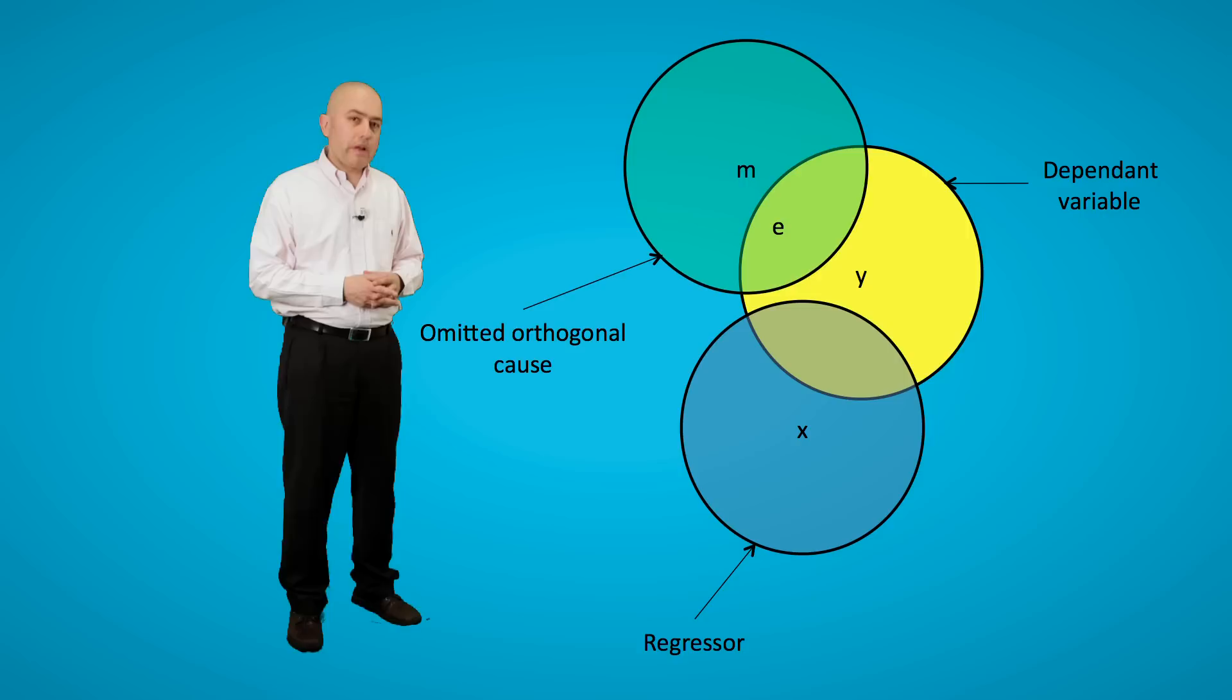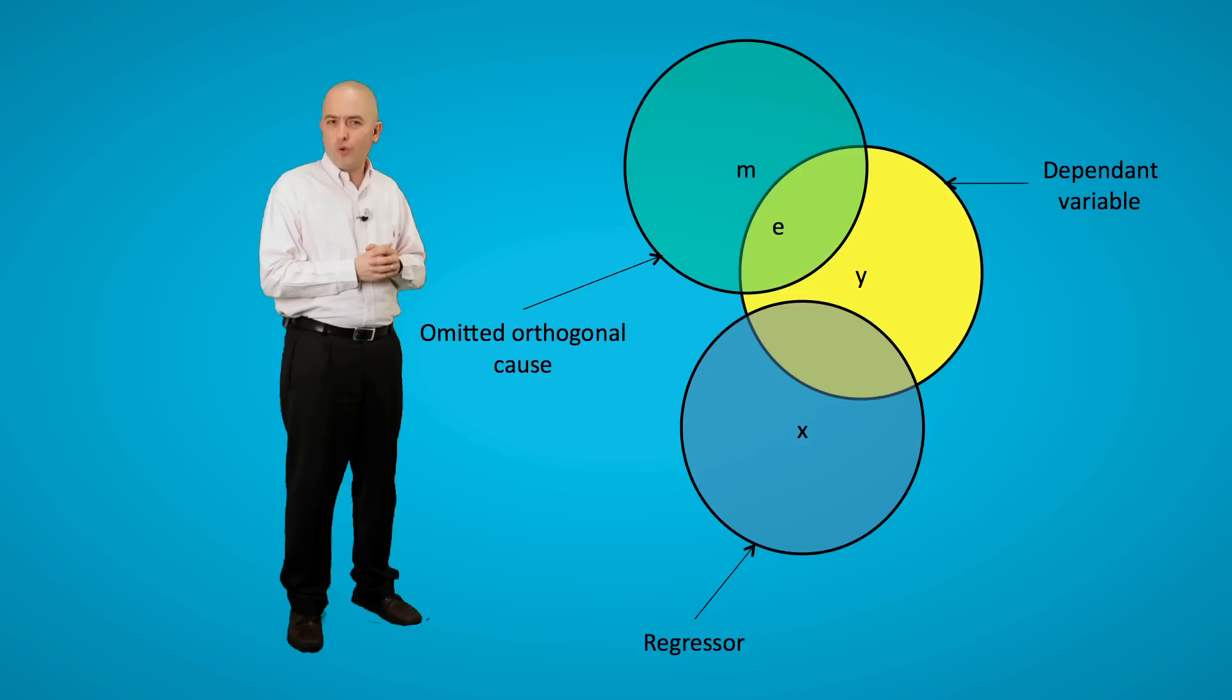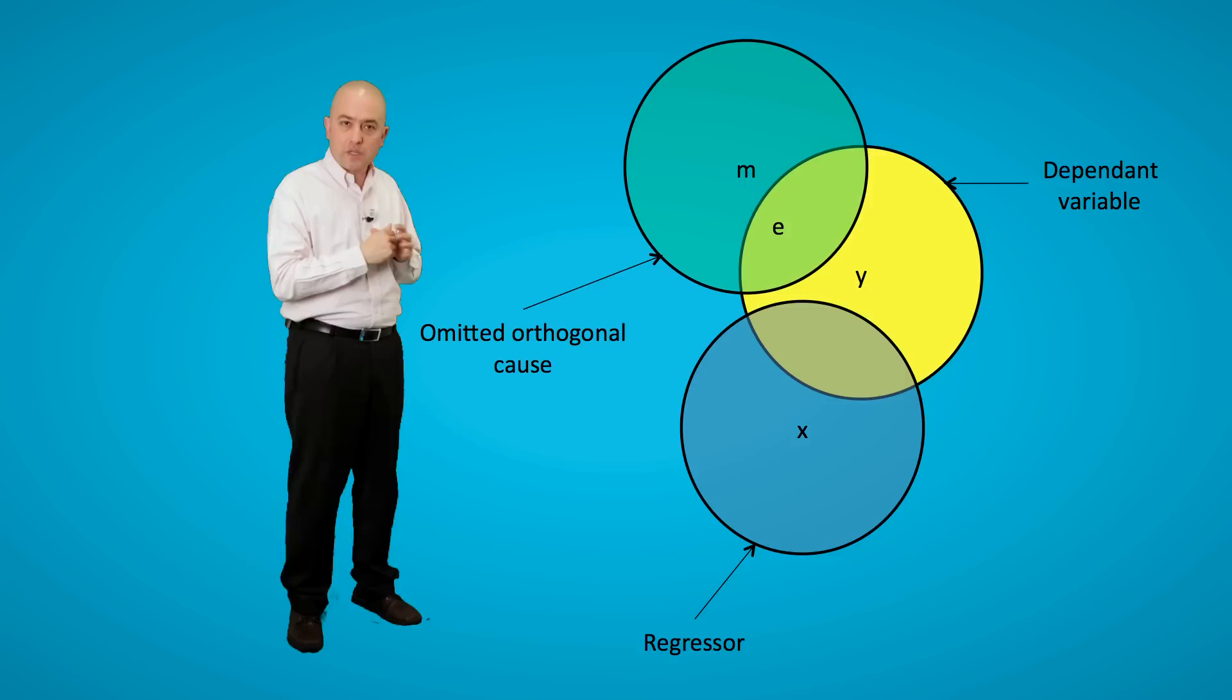Of course, Y depends on X, but Y depends on other variables that we have not measured. I'm just going to add one in here, M. Now, because we have exogenously manipulated X, X does not overlap with M at all. It is independent of it, or it is orthogonal to it. Therefore, what we estimate in terms of X predicting Y, the slope coefficient, is actually consistent. By consistent, we mean that it reflects the true value as the sample size will increase.